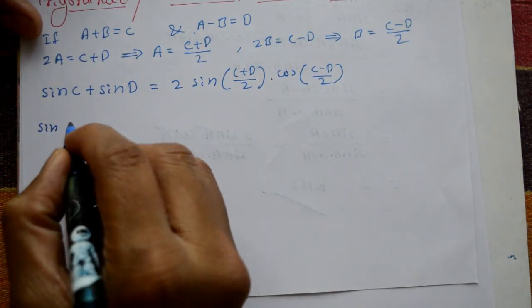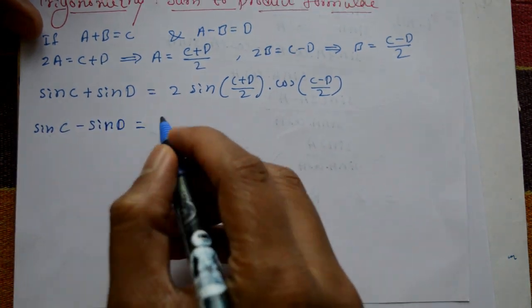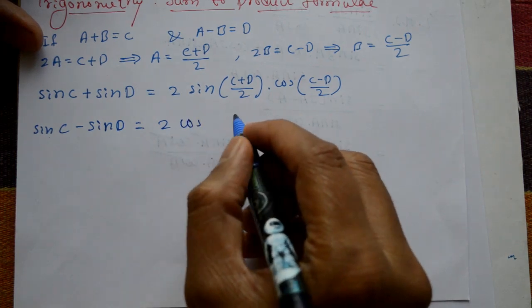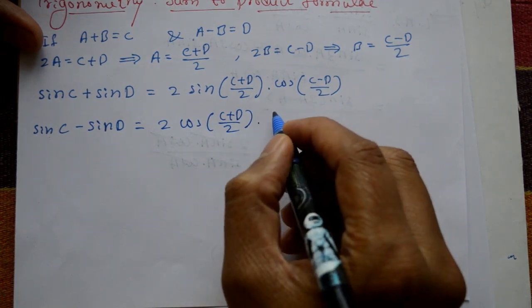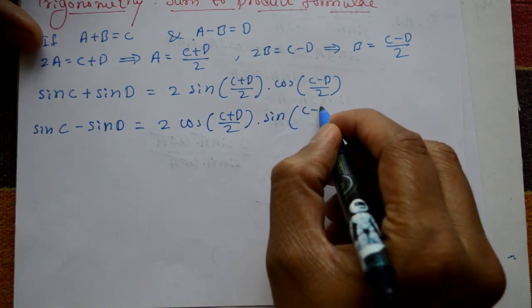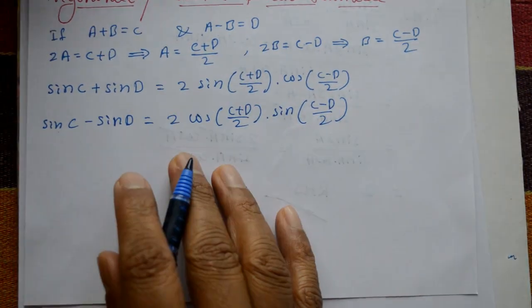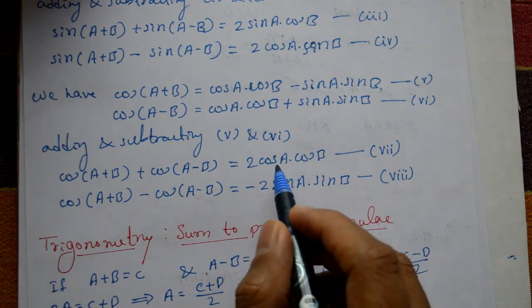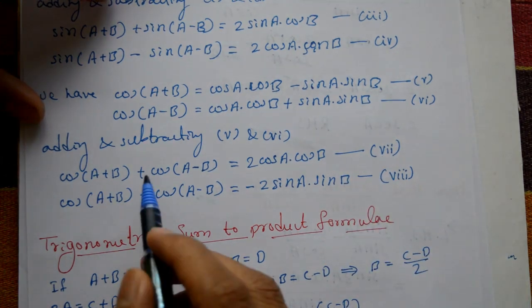Equation number four becomes: sin C − sin D = 2 · cos((C + D)/2) · sin((C − D)/2).